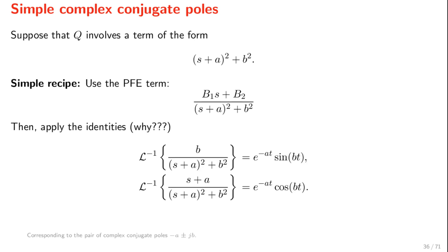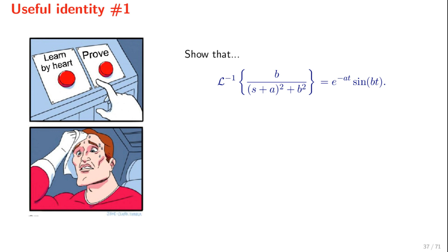We can now make use of the following identities, which we can prove very easily. For example, for this identity, we can observe that if a is equal to zero, this becomes the inverse Laplace transform of sine of b times t.